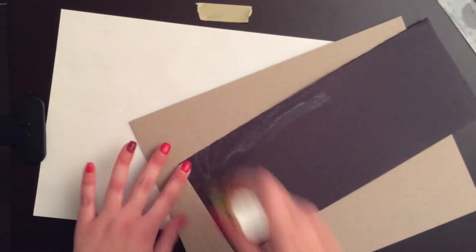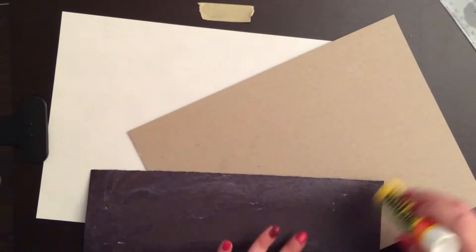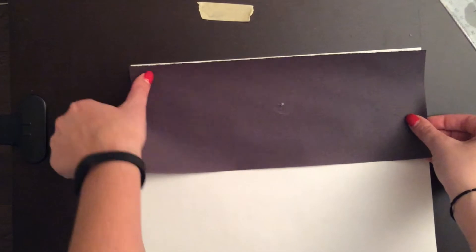Then using a scrap piece of paper, goose paper, or something else that's lying around that you don't mind getting glue on, you're going to apply glue onto your black piece of paper and you're going to place it on top of your white piece of paper.